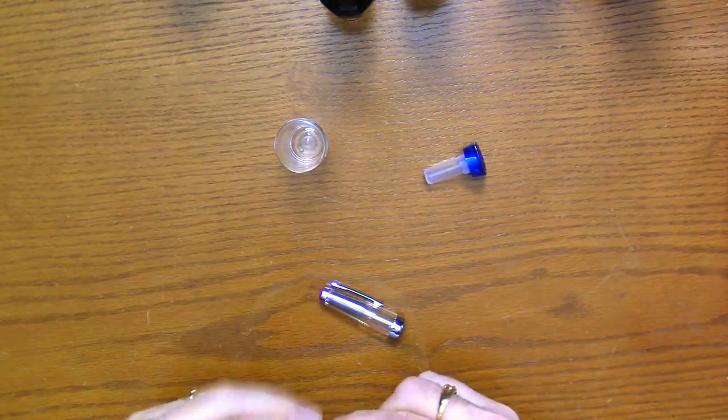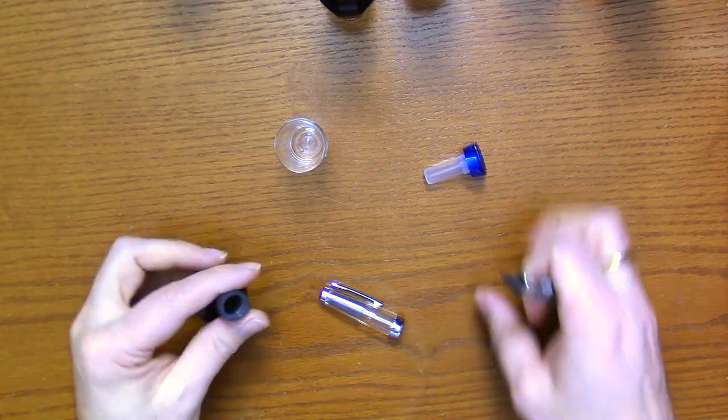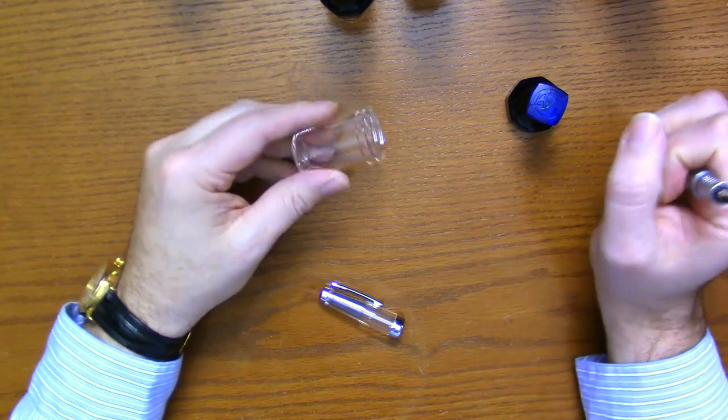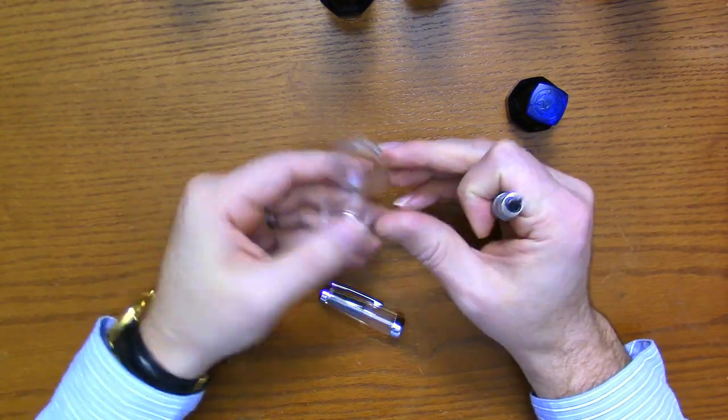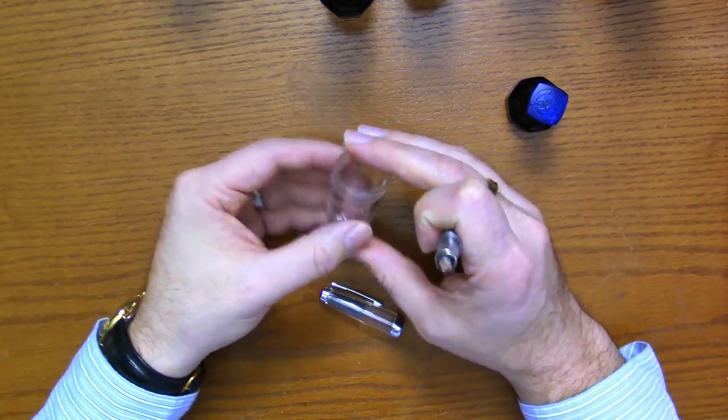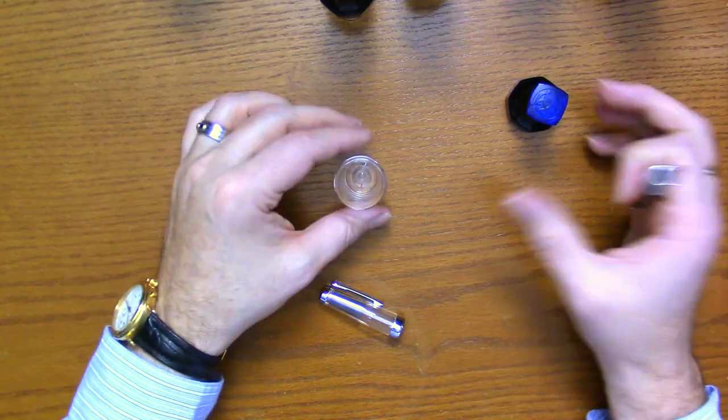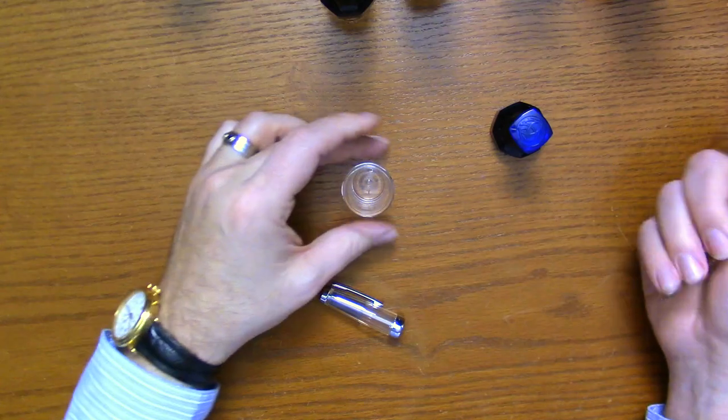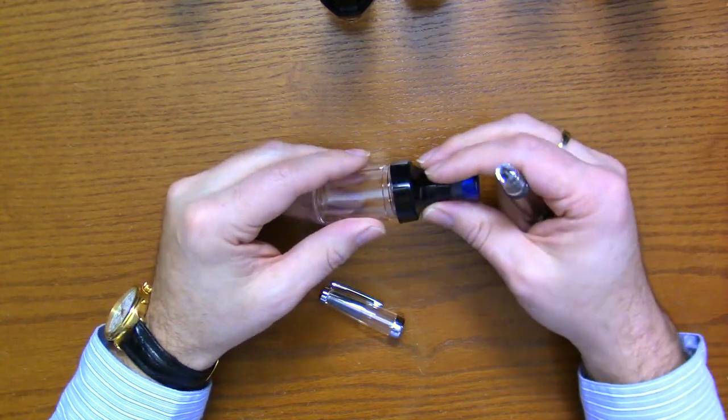TWSBI is also advertising that this is for use for all other pens. Originally I was thinking that maybe that meant they were going to design something similar to the Visconti Inkwell traveling ink pot. What they actually mean is you can take the top off and fill your pen directly from there.